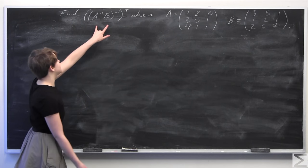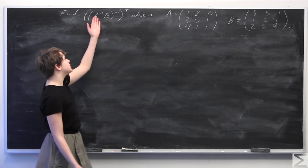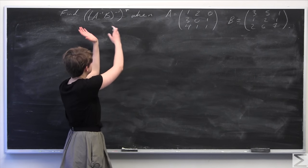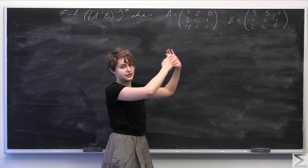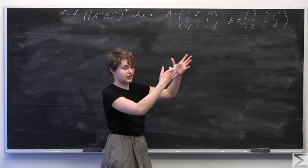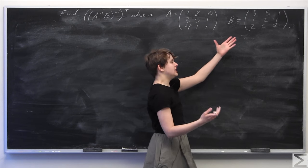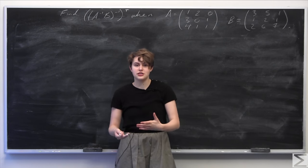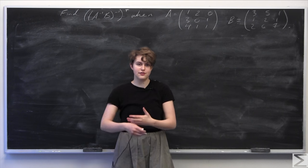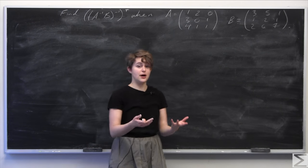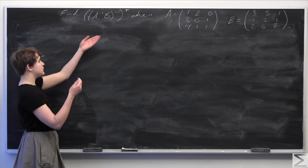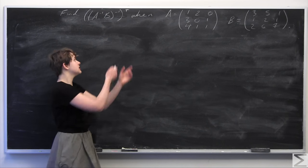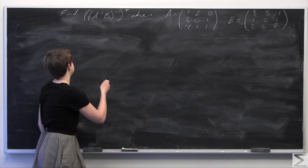This looks like a really ugly problem if we just did it as is, because we have to take lots of inverses. Finding the inverse of a 3×3 matrix takes a while since you have to do Gaussian elimination. So we want to find the inverse as few times as possible. We're going to use the properties of matrix inverses to simplify this quantity.